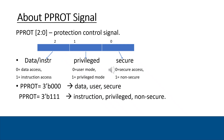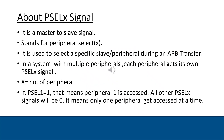Let's discuss PPROT and PSEL in detail. PPROT is three bits wide. The first bit indicates whether the signal is secured or non-secured. The second bit indicates whether it is user mode or privileged mode. The last bit indicates whether it is a data access or instruction access. For example, when PPROT is 000, it means data access, user mode, and secured. When PPROT is 111, it means instruction access, privileged, and non-secured.